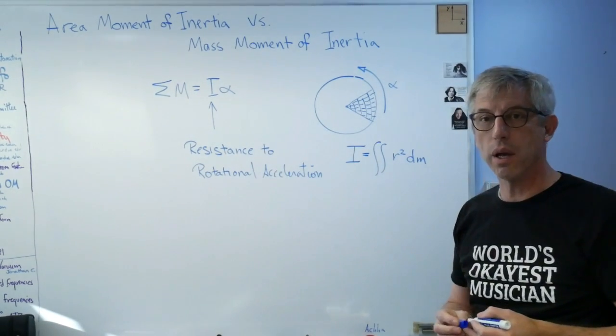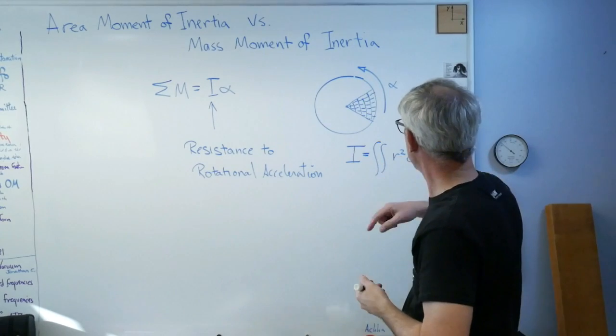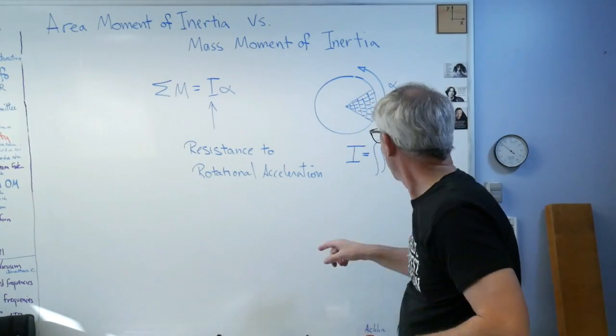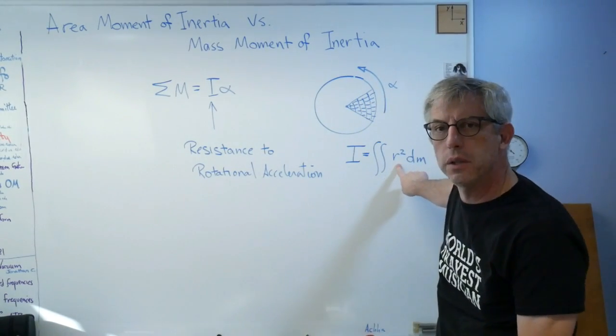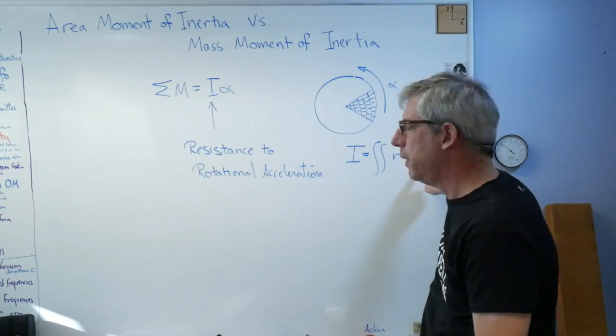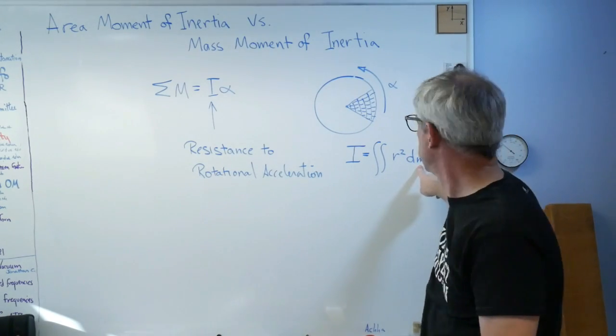So now we get r squared dm, and we have to integrate over an area, so it's a double integral. Distance squared times some function - that is also a second moment.